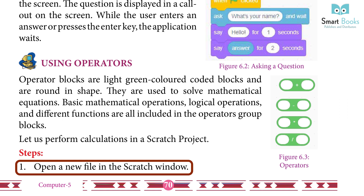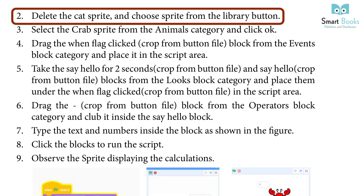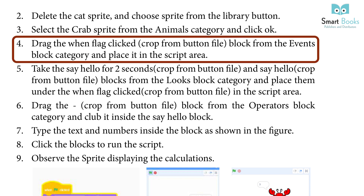Steps to perform calculations: 1. Open a new file in the Scratch window. 2. Delete the cat sprite and choose a sprite from the library button. 3. Select the crop sprite from the animals category and click OK. 4. Drag the 'When flag clicked' block from the Events block category and place it in the script area.